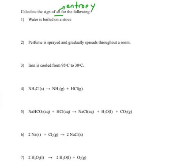So water is boiled on a stove. You have liquid water in a nice pot, it's in one place. And now it is being boiled, so it's a gas all throughout the room. So the water has a lot more places it can be. This is more random. So delta S is going to be positive. It is more random.